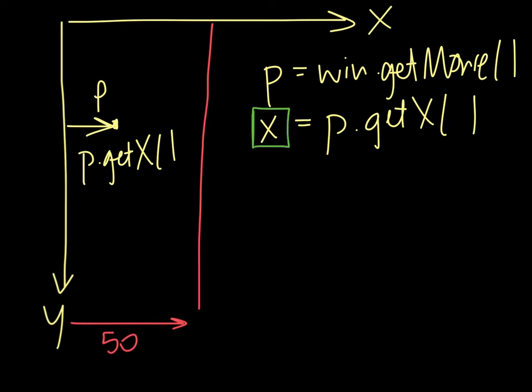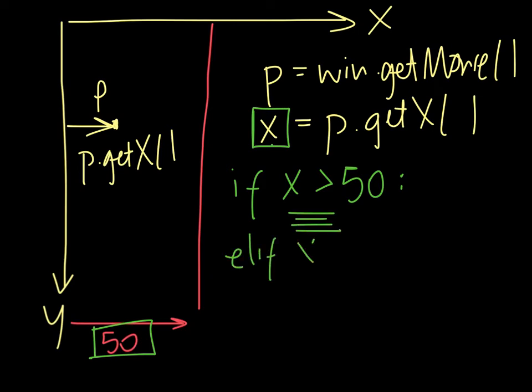and I'll store it in this variable here, x. Then I need to compare whether that is bigger or smaller than this value here. So I do an if x is greater than 50, do something. Else if x is less than, or shall we say equal to 50, do something else. And that essentially is the way that this logic works.